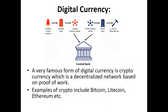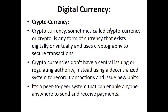Another type of digital currency is decentralized digital currency. A very famous form is cryptocurrency, which is based on a decentralized network using proof of work — you must show proof that you have completed work assigned by the network to earn coins. Examples include Bitcoin, Litecoin, Dogecoin, Ethereum, and Leo Coin. Cryptocurrency exists digitally or virtually and uses cryptography to secure transactions. It does not have a central issuing or regulating authority.